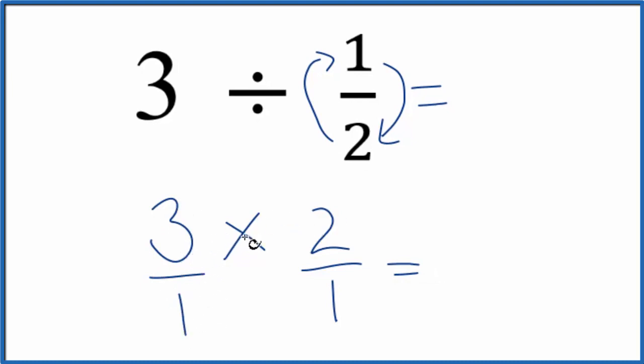But now three times two is six. One times one, that gives us one. The answer is six. Six over one is six. So three divided by one half, that is six.